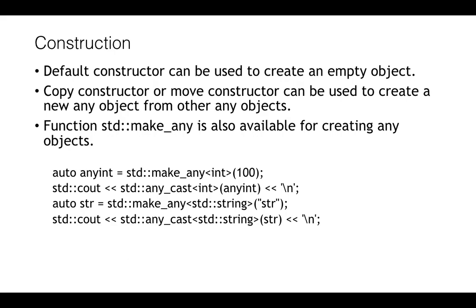It has a default constructor which can be used to create empty objects. It also has copy constructor or move constructor to create a new any object from other existing objects. There is also an important function called make_any which is also used for creating any objects. Here you can see a simple example of how to use make_any to create any object holding an integer or a string.